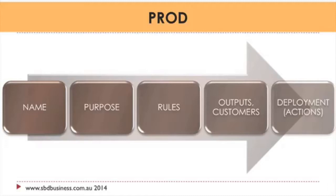So really simple — you name the process, the project, or whatever it is that you're looking at. You then define what's the purpose of this project: what are we trying to achieve, why do we exist? We then talk about the rules — are there any unofficial or official rules? What are the outputs? What are the concrete deliverables that we must deliver, and who to? Who are the customers?